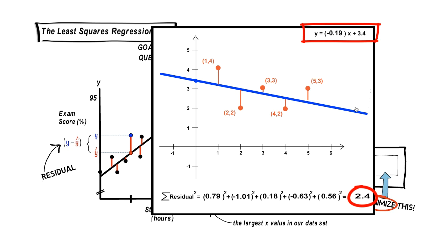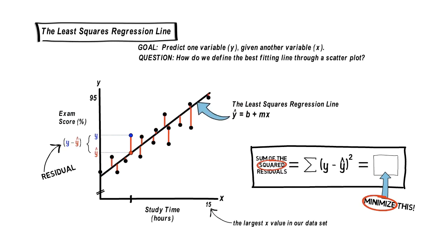So there you go. That's what I'm going to call the least squares regression line. The particular line such that it most closely mimics the behavior of the dots because the sum of the squared residuals is the smallest it can be at 2.4. So there is our least squares regression line. y equals negative 0.19x plus 3.4. So hopefully that gives you a better idea of what we're talking about.